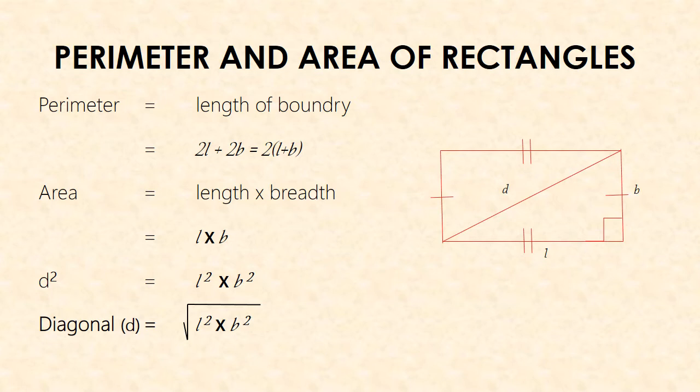L is length and B equals breadth. Then D squared equals L squared plus B squared. So we can calculate the diagonal by taking the square root of D squared, that is the square root of L squared plus B squared.